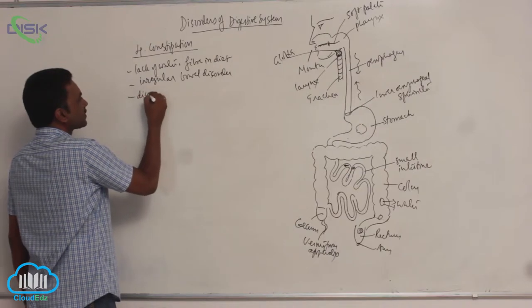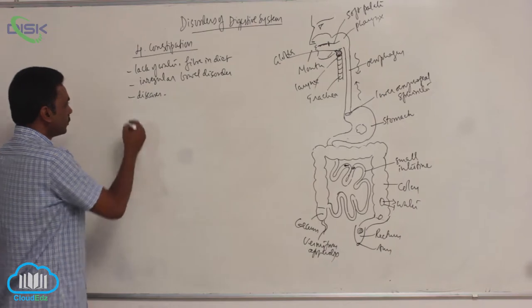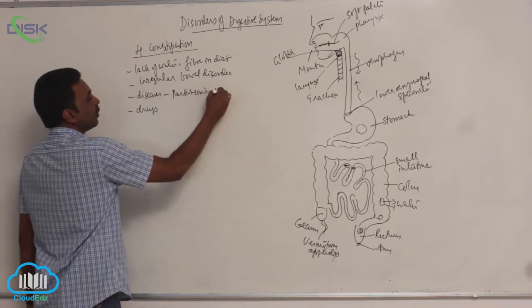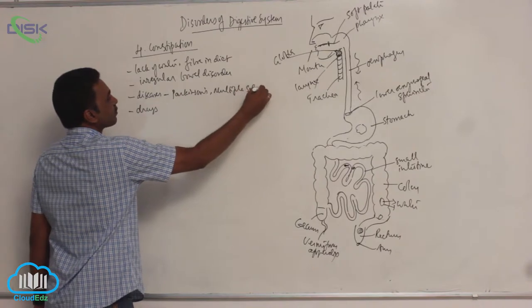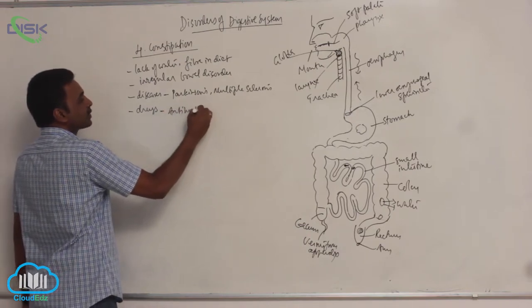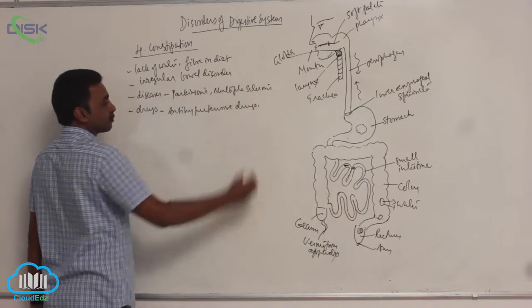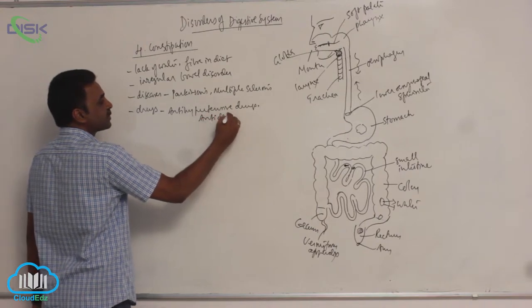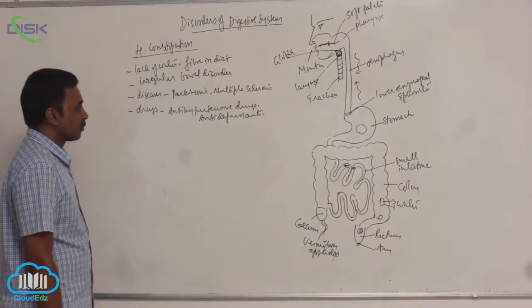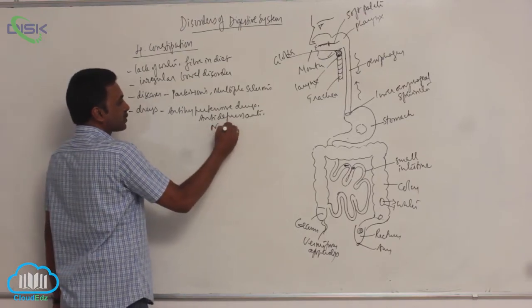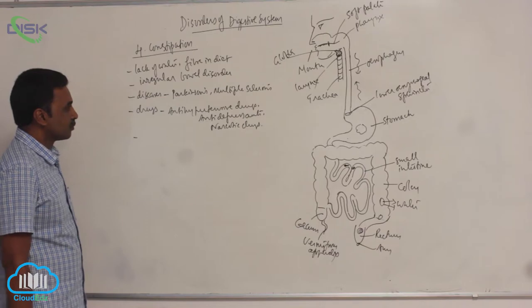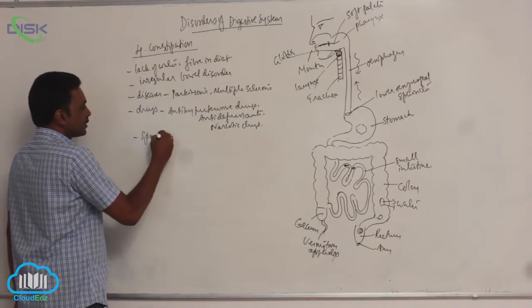Certain diseases and certain drugs can cause constipation. Diseases like Parkinson's and multiple sclerosis. Drugs include antihypertensive drugs, antidepressants, and certain narcotic drugs.